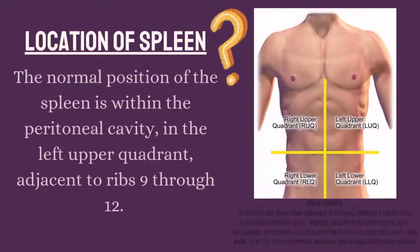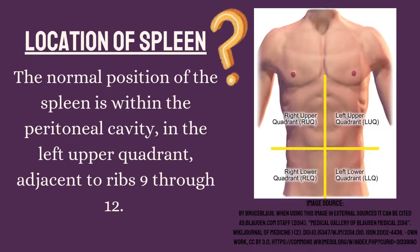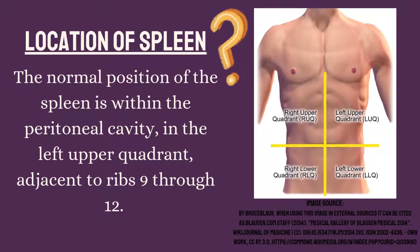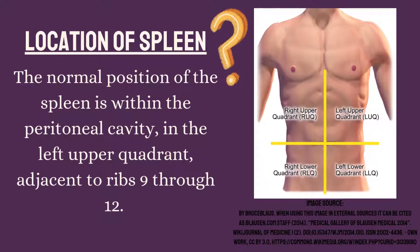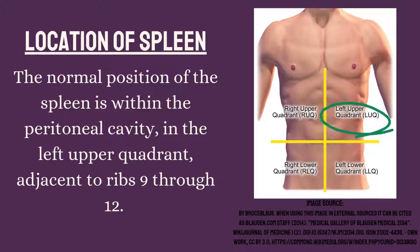What is the normal location of the spleen? The normal position of the spleen is within the peritoneal cavity in the left upper quadrant, adjacent to ribs 9 through 12.